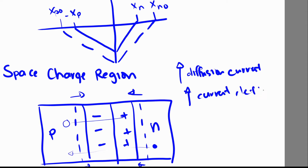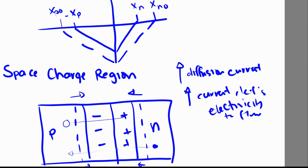Increasing the diffusion current basically increases the overall current, which lets electricity flow. Another way to think about the diffusion current is that we are injecting minority carriers from one side of the junction to the other. For example, an electron on the N-type side is still a majority carrier there. But once it passes through the junction and goes to the P side, it becomes a minority carrier, since in the P-type there are fewer electrons than holes. So what is happening is we're injecting minority carriers onto the other side of the junction.